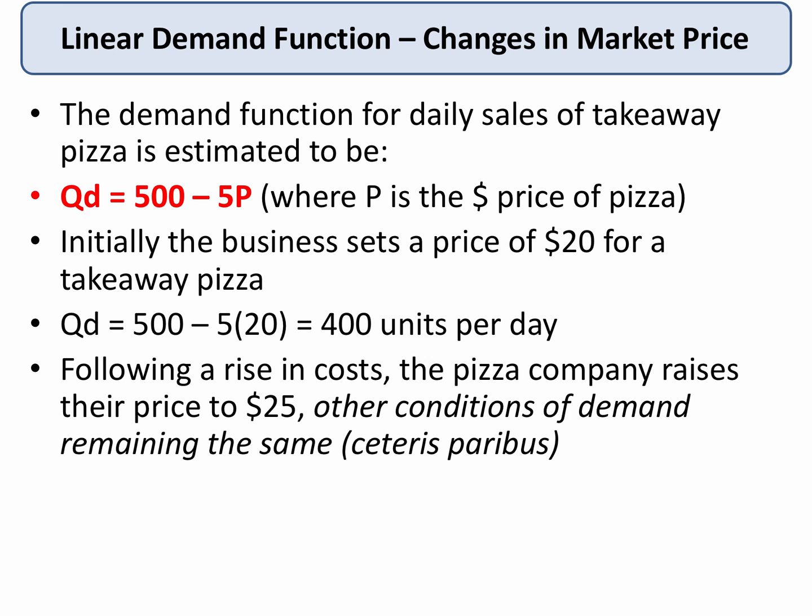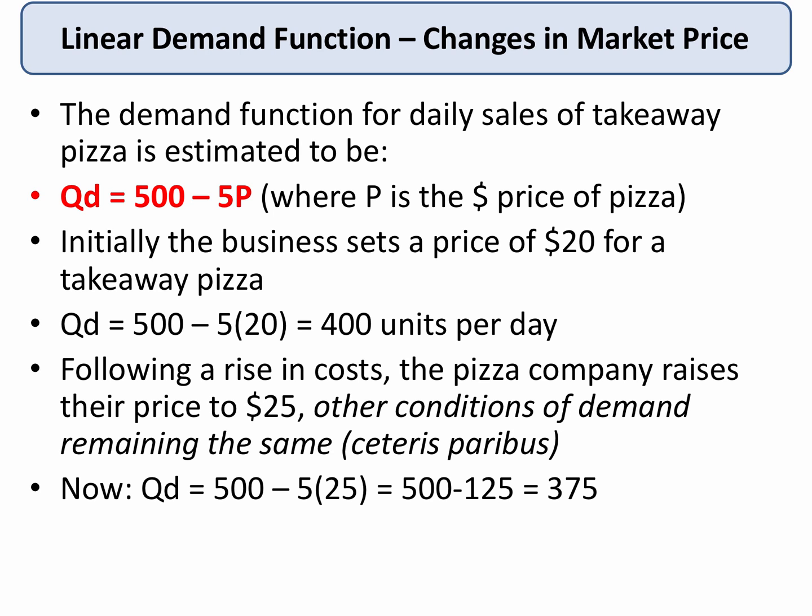But following a rise in costs, the pizza company decides to increase their price to $25. Other conditions of demand remain the same — ceteris paribus. So now to work out demand: 500 minus 5 times 25 equals 500 minus 125, which means that if the price of pizza goes up to $25, quantity demanded falls to 375 from 400.